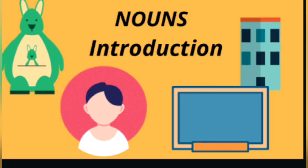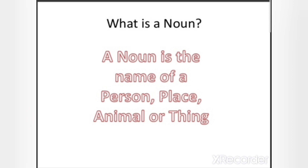I'm going to start grammar chapter number two. The first chapter we did earlier — the topic was 'sentence' — and now we'll learn about nouns in chapter number two. In the last class you also learned about nouns, but here you will learn in detail. So let's start: what is a noun? A noun is the name of a person, place, animal, or thing.